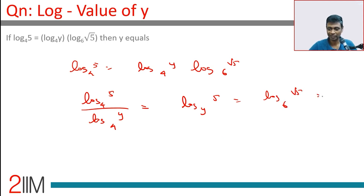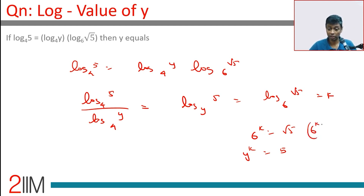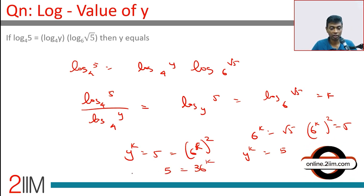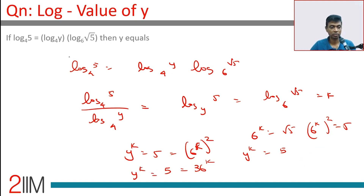Let's call this k. So 6 to the power k is root 5, and y to the power k is 5. Squaring the first equation: 6 to the power k squared is 5, meaning 36 to the power k is 5. But y to the power k is also 5, which is nothing but 36 to the power k. Therefore y equals 36.